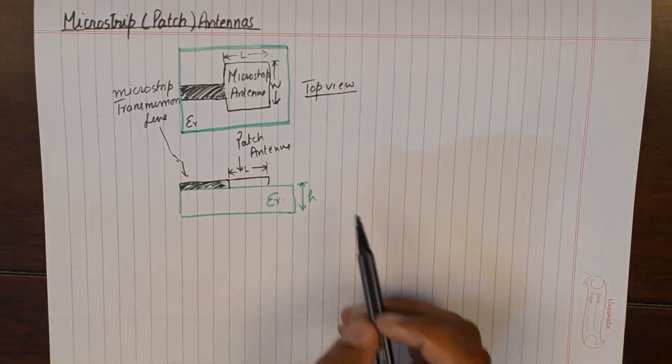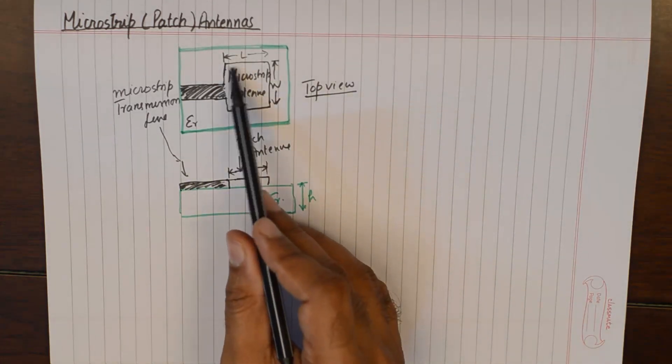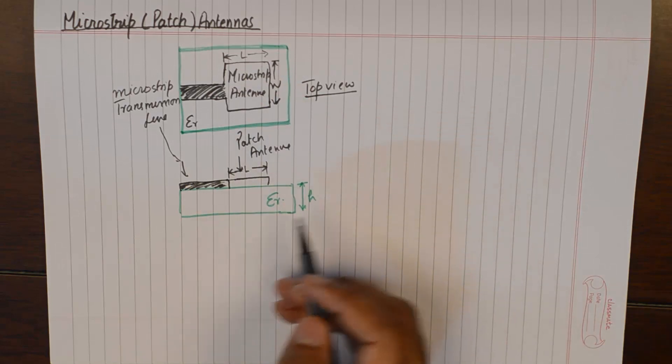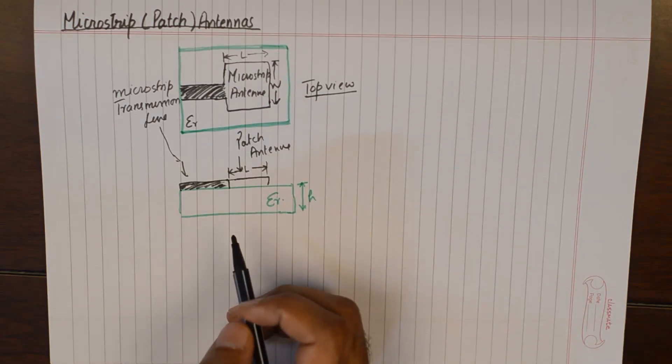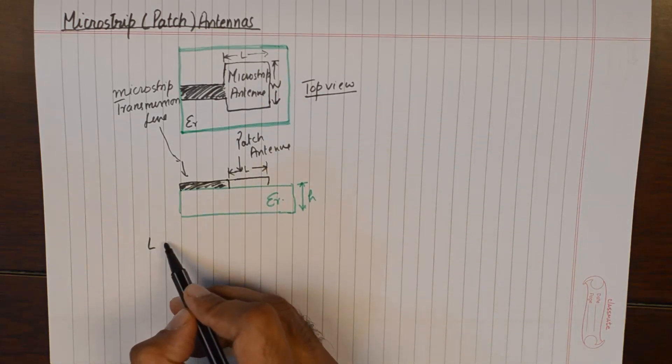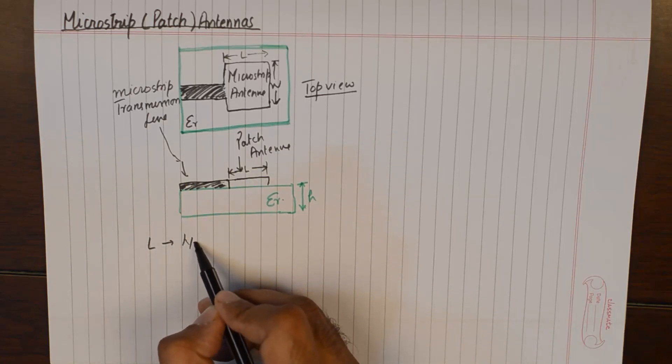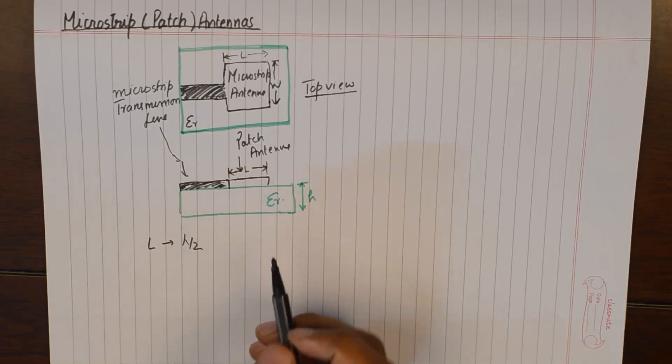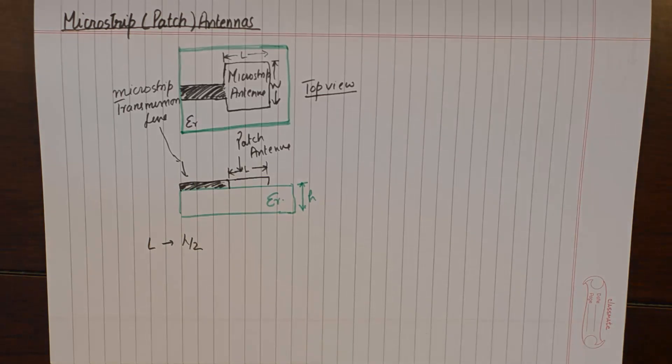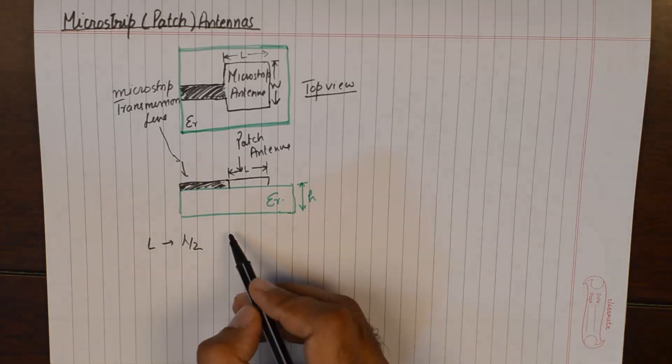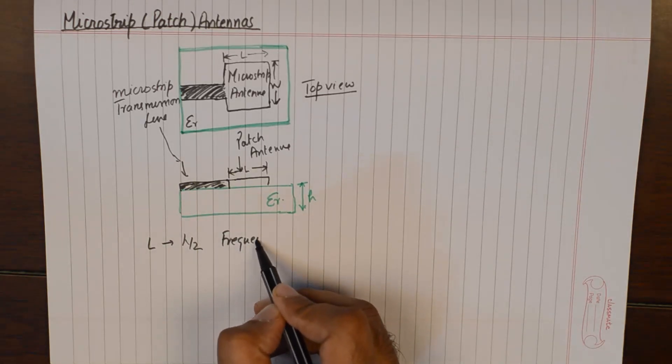From the side view we'll be able to see L. Please understand this length L of the microstrip antenna is a very important parameter.